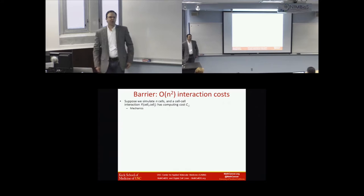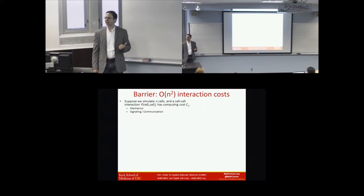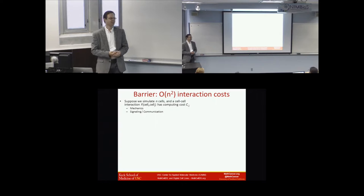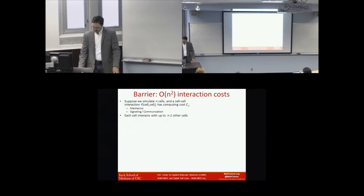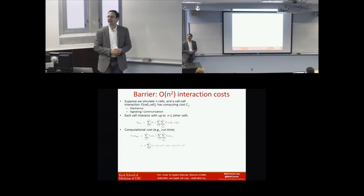One of the first challenges we all face is that agent models are potentially order N-squared in computational cost. You have N cells which need to interact with at most N-minus-one other cells. Examples include mechanics — if you're not clever, you have to test for interactions with all other agents, which doesn't scale well. Also signaling communication: in the most general model, every cell could communicate in some way with every other possible cell. That's not good.